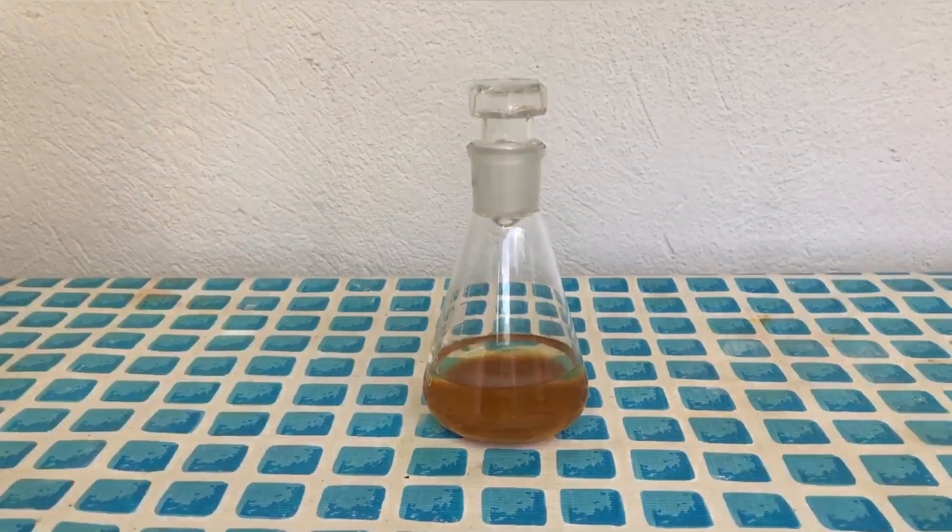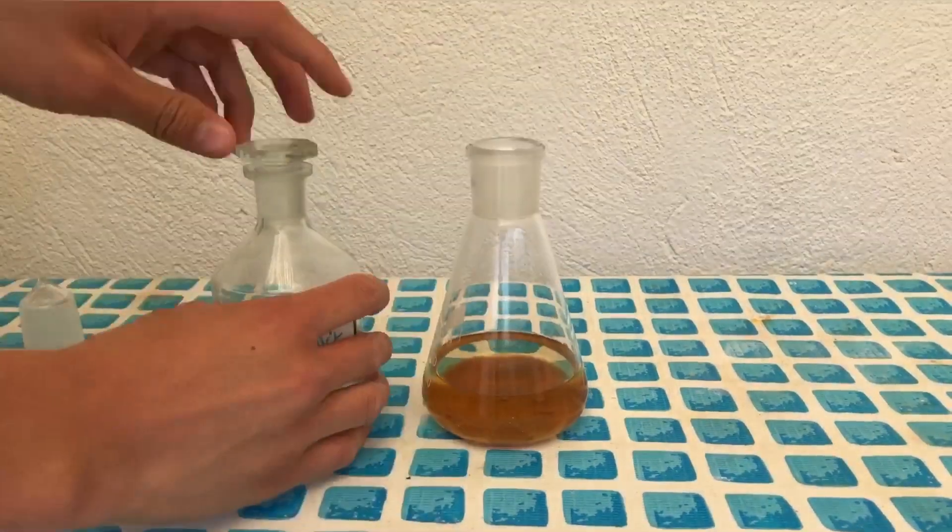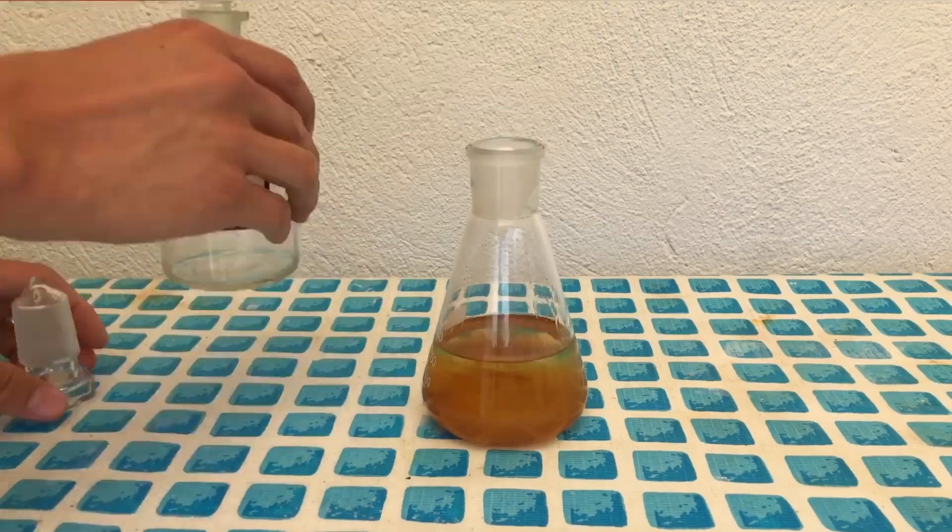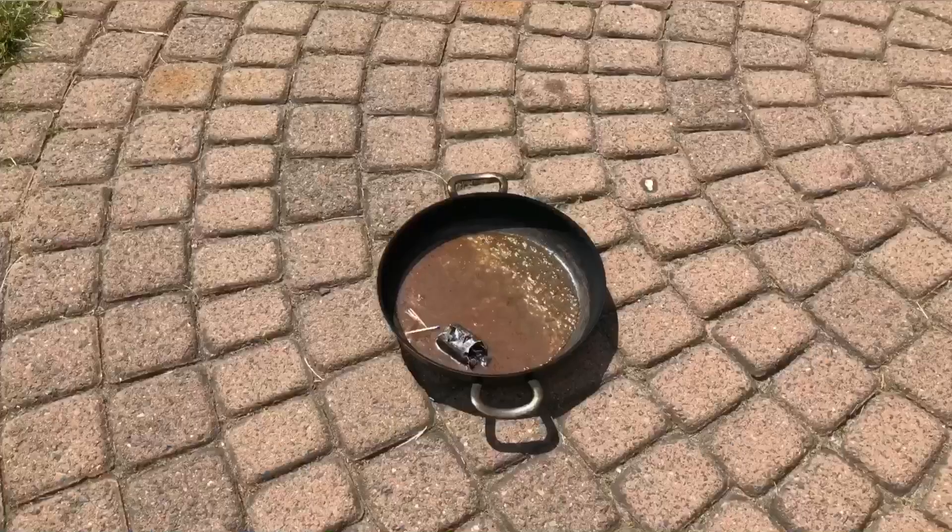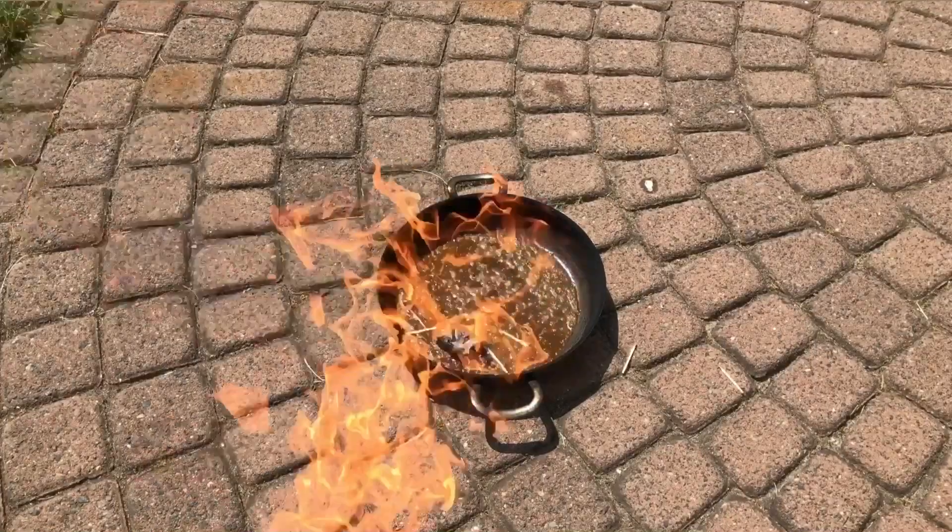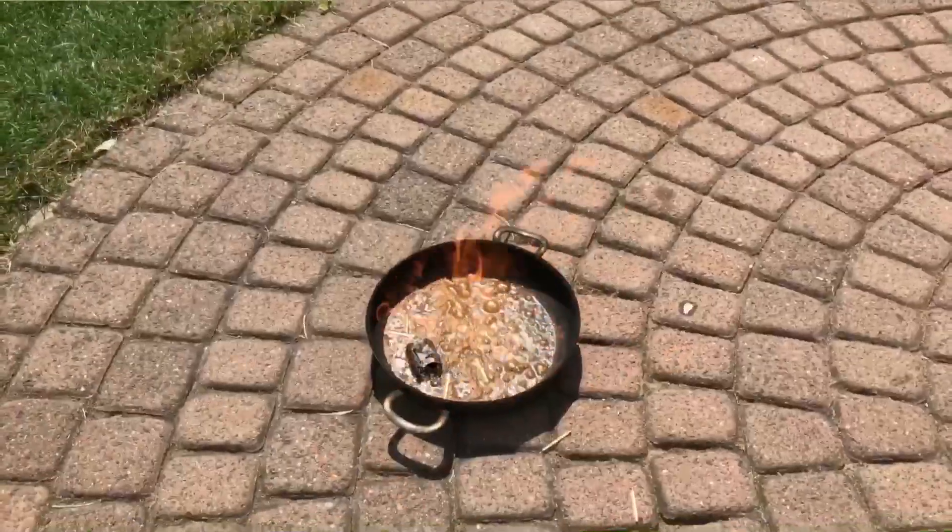The ether was decanted into this Erlenmeyer flask as best as I could, some crap made it over, but we added distilled water afterwards, shook it up, and removed whatever of the ether, sodium hydroxide and iron hydroxide stuff was left.